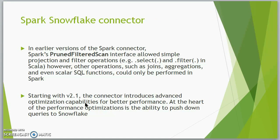In earlier versions of the Spark connector, Spark uses a pruned filter scan — meaning it eliminates unneeded columns and selects only the filtered records for the predicate which we are passing. That query is sent to Snowflake, the selected data is retrieved as a result set to a data frame, and joining or aggregations are done in Spark. Other joining and complex operations are not possible to be done in Snowflake itself. This approach is typically not ideal for more capable Spark data sources like Snowflake, which can perform these functions more efficiently.